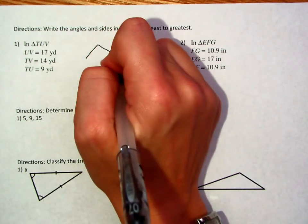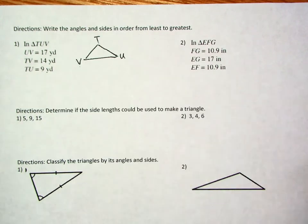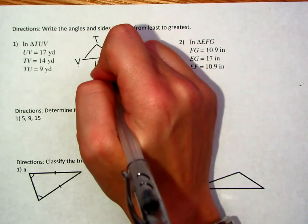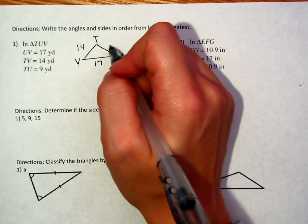So if I were to draw this triangle here, T, U, V, remember I'm not going to draw this to scale, I'm just kind of putting the letters down. It's saying that UV here is 17, TV here was 14, and then TU was equal to 9.